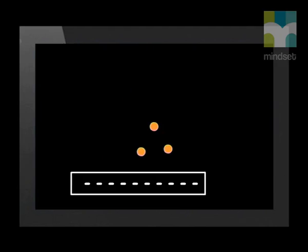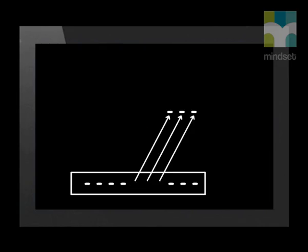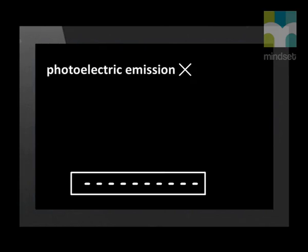Einstein suggested that when photons reach a metal plate, each photon gives all its energy to only one electron on the plate. If an electron receives enough energy to allow it to break away from the metal it is on, then it is emitted. Photoelectric emission occurs. If an electron does not receive enough energy to be emitted, it stays on the metal, so no photoelectric emission occurs.